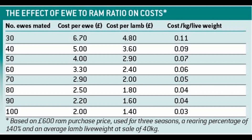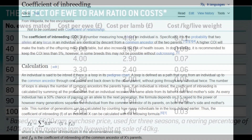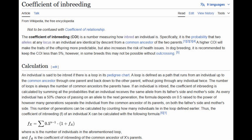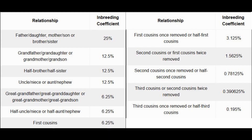Before we go into what's wrong with this approach, let's take a quick look at the coefficient of inbreeding. This is really just the probability that there will be duplicated DNA information that can cause a genetic problem. Breeding a father to a daughter, a mother to a son, or a brother to a sister would be a 25% inbreeding coefficient. Breeding a grandfather to a granddaughter or grandmother to a grandson would be 12.5%, as would a half-brother to a half-sister, or an uncle to a niece or aunt to a nephew. Breeding to a first cousin would cause a 6.25% coefficient of inbreeding, and more distant relationships are less than 6.25%.